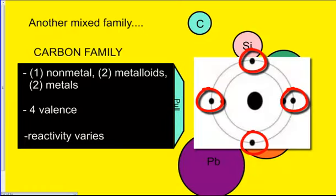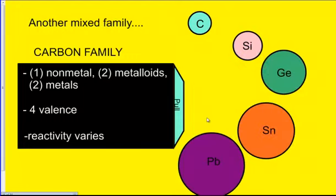Four valence makes it kind of in the middle of the road as far as obtaining eight go. It's kind of right in the middle. It could react or not. It's not going to be that reactive. The reactivity is going to vary.